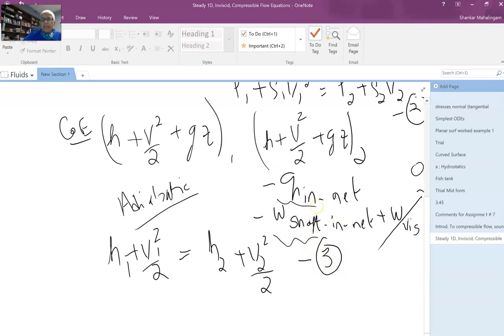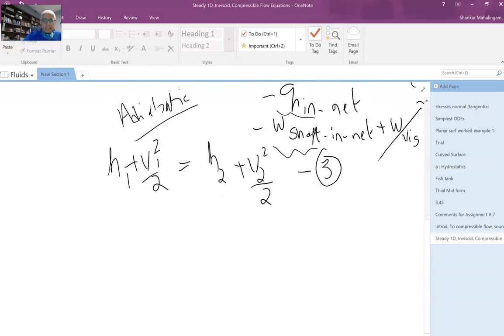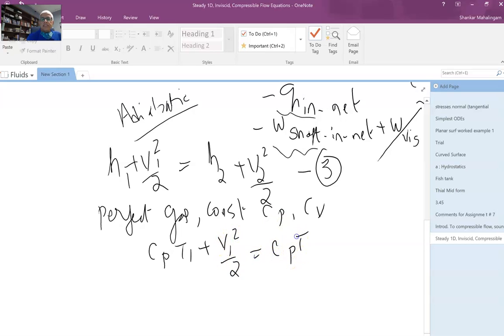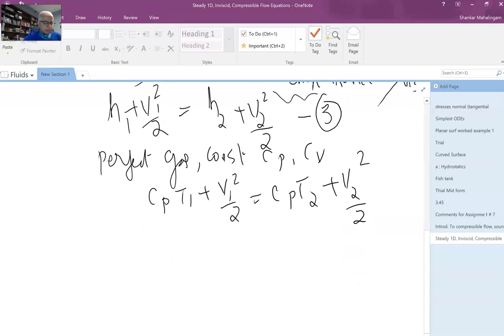So equations 1, 2, and 3 are conservation of mass, Newton's second law, and conservation of energy. If you assume we have a perfect gas or an ideal gas with constant specific heat—perfect gas with constant Cp, Cv—then I can replace equation 3 by Cp*T1 + v1^2/2 = Cp*T2 + v2^2/2, Cp being the specific heat at constant pressure.